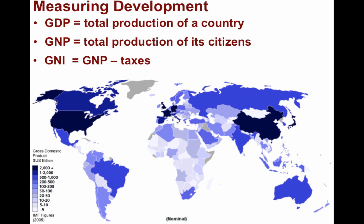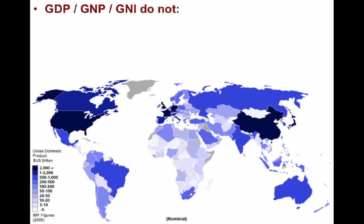All of these statistics have their shortcomings. For example, they do not include information on the informal economy. The formal economy is the legal economy that governments tax and monitor, whereas the informal economy includes things like the black market, the drug trade, or any kind of work under the table.